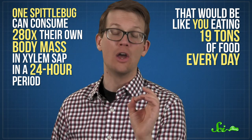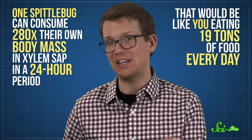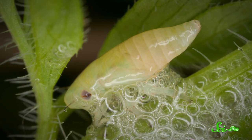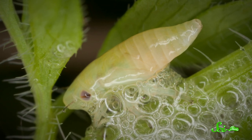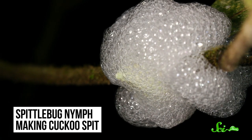Of course, all that delicious sap has to go somewhere, and fast. So Spittlebug nymphs excrete the excess anally. The Spittlebug adds some chemicals and then mixes in air. The result is a foamy substance known as cuckoo spit.